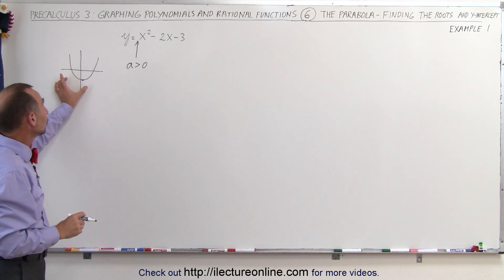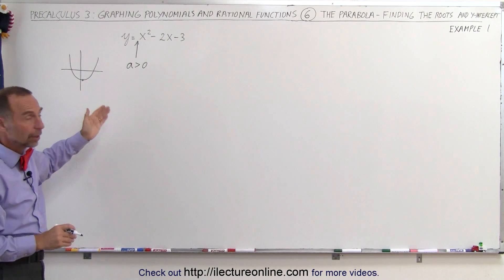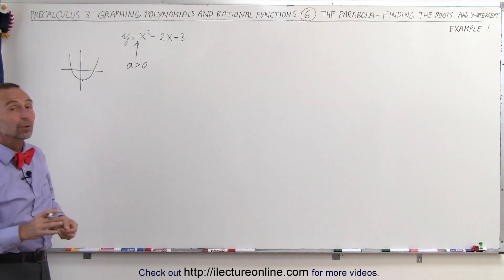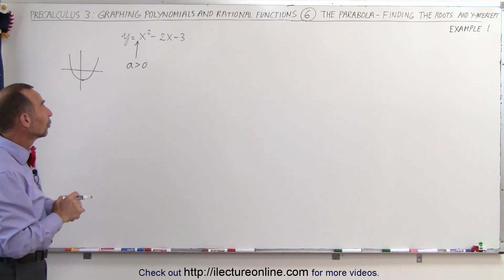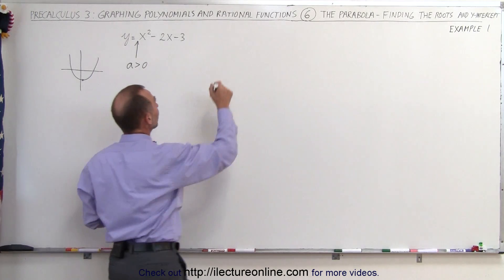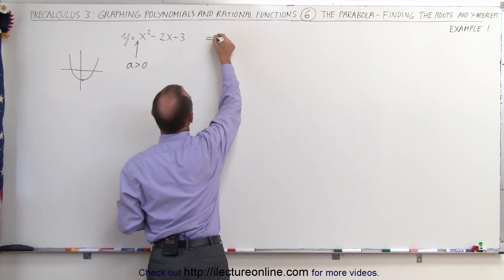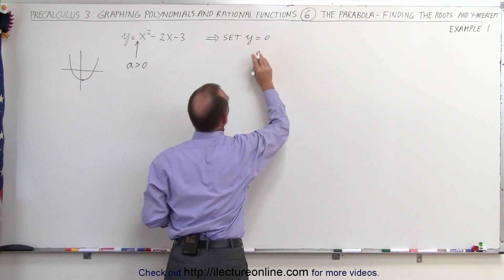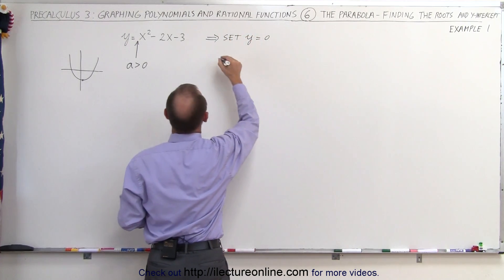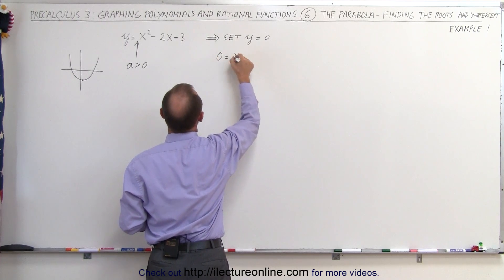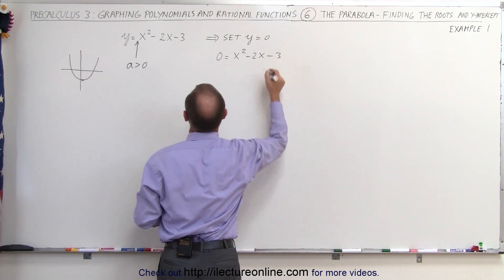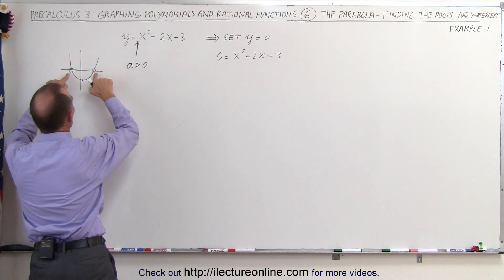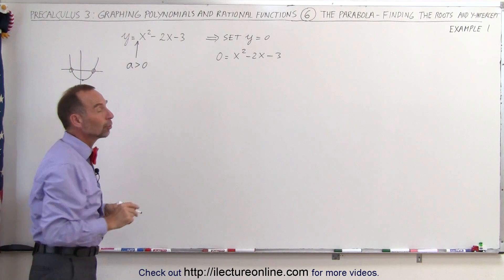But we don't know yet if it has real roots, imaginary roots, or just one root — whether it's above or below the x-axis, we don't know that yet. Next, we're going to find the roots if they exist. To find the roots, we set y equal to 0. So 0 equals x squared minus 2x minus 3. When the parabola crosses the x-axis, that's where y is equal to 0 — that's where we find the roots.